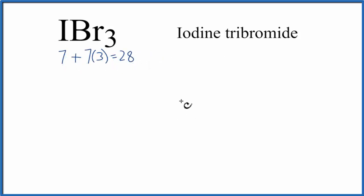So we'll put iodine at the center, and then we'll put the 3 bromines around it. We have 28 total valence electrons for iodine tribromide.